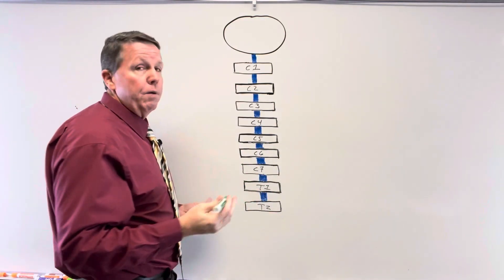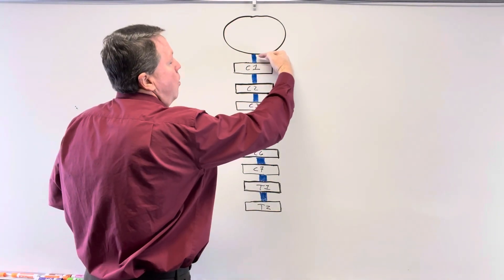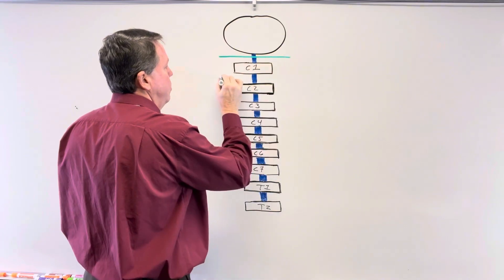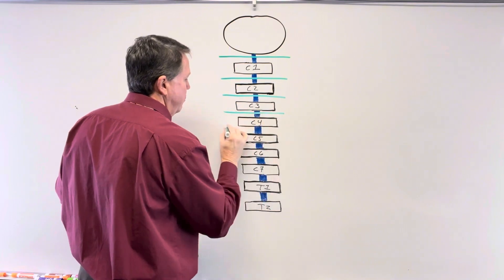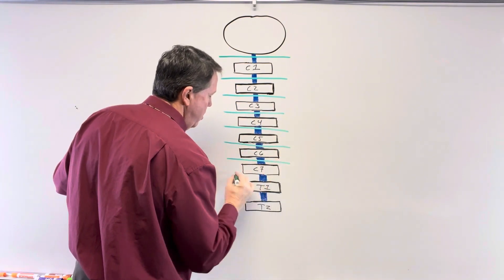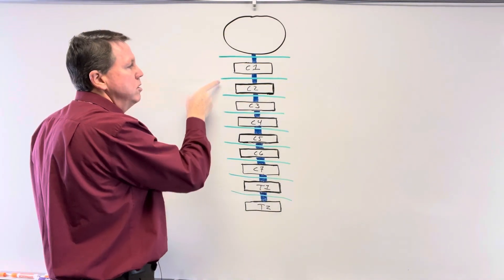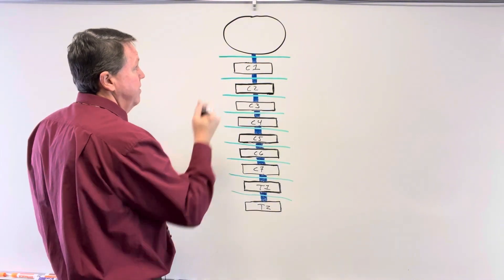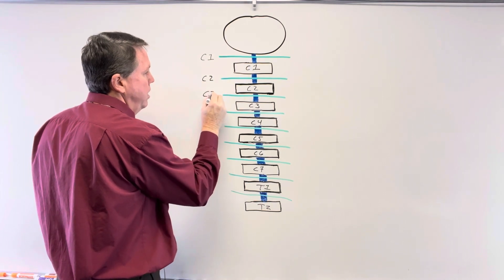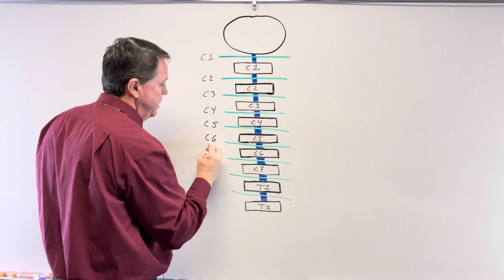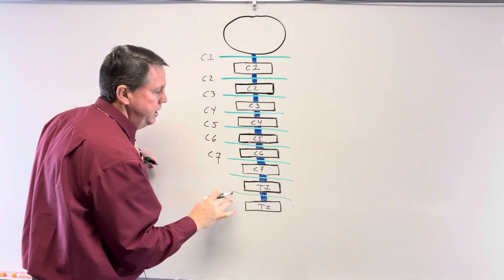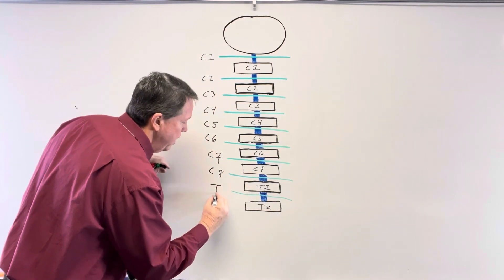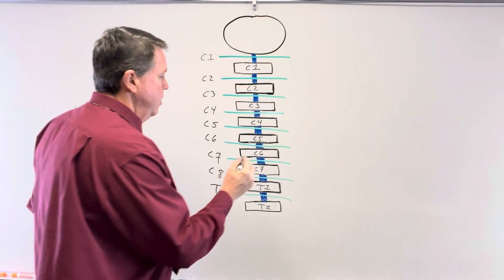Coming off the spinal cord we have spinal nerves. The spinal cord is part of the central nervous system; spinal nerves are part of the peripheral nervous system. In the cervical spine, we number spinal nerves by the vertebrae below — so C1 vertebra gives us the C1 spinal nerve, then C2 through C7. There's also a C8 spinal nerve at the transition. Once we reach the thoracic spine, nerves are named by the vertebra above, so that first one is the T1 spinal nerve.